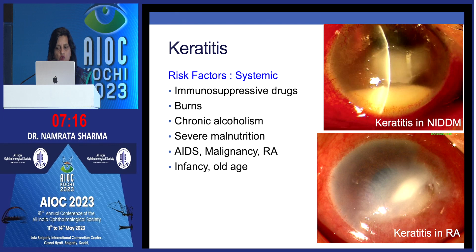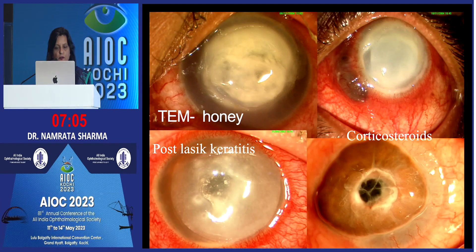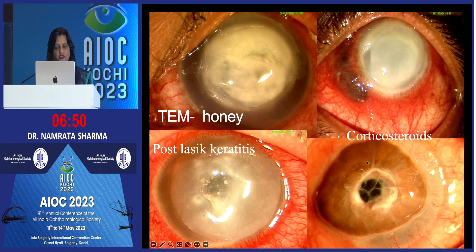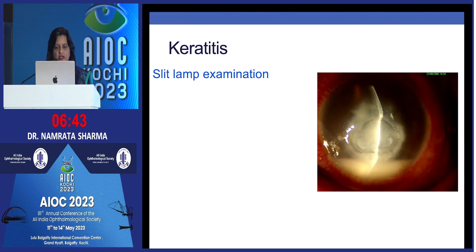Risk factors could also be systemic such as use of immunosuppressive drugs, burns, chronic alcoholism, severe malnutrition, AIDS, malignancy, rheumatoid arthritis, and extremes of ages. These images show how the use of traditional eye medicine such as honey can cause microbial keratitis, and this is a post-LASIK keratitis where notice that in these two cases there is excessive thinning and perforation, mainly because of concomitant use of topical steroids with antibiotics.